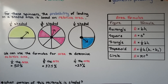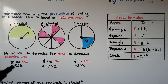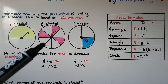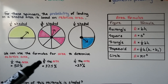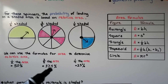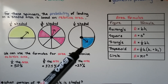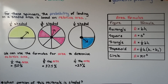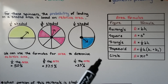We can use the formulas for area to determine relative area. We know this first one is half shaded, so that would be 50% of the area. Three-eighths of this is shaded — three-eighths is 0.375, or 37.5%. For the last one, it's one-fourth, so 25% of the area is shaded.